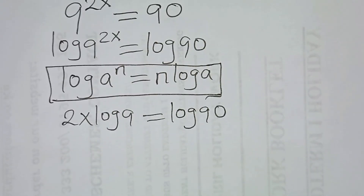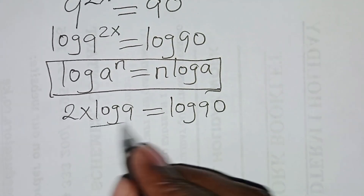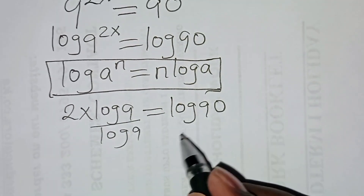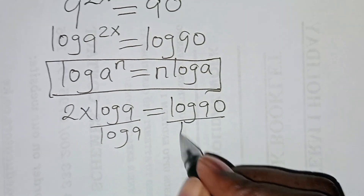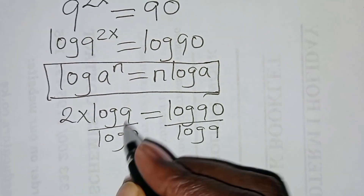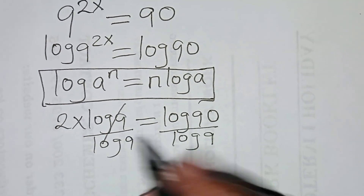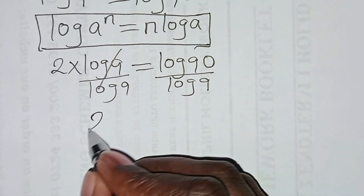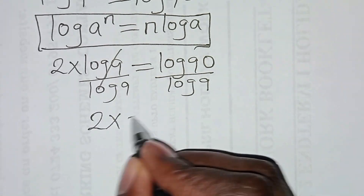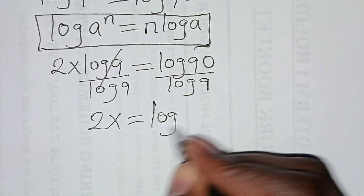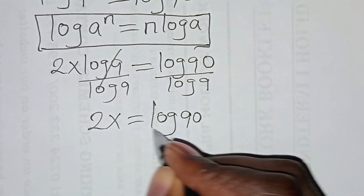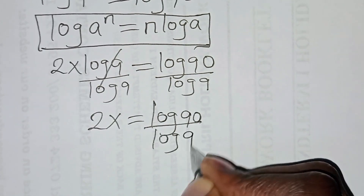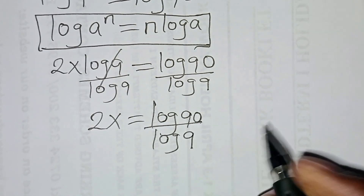So let's divide both sides by log 9. If we simplify here, we'll have 2x is equal to log 90 divided by log 9.